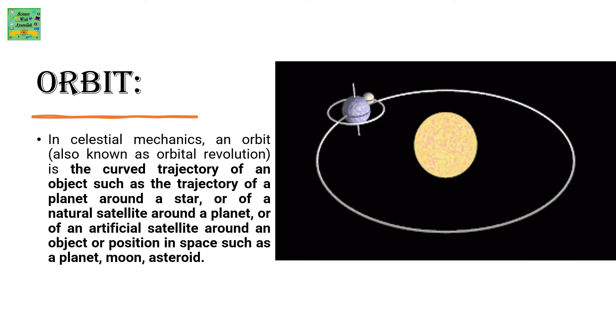Orbit: In celestial mechanics, an orbit, also known as orbital revolution, is the curved trajectory of an object such as the trajectory of a planet around a star, or of a natural satellite around a planet, or of an artificial satellite around an object or position in space such as a planet, moon, or asteroid.